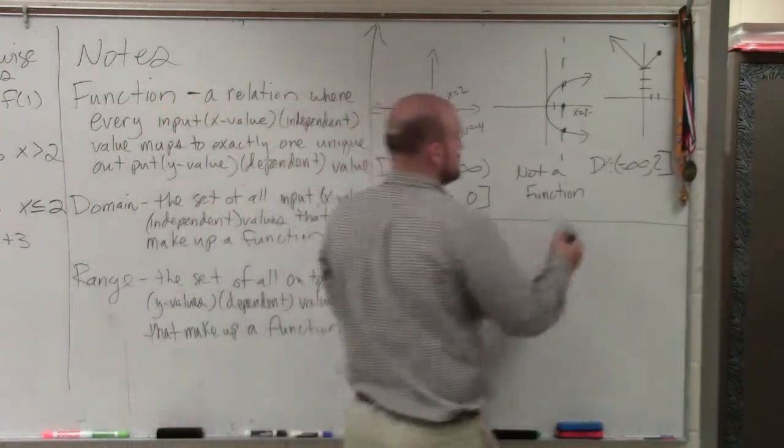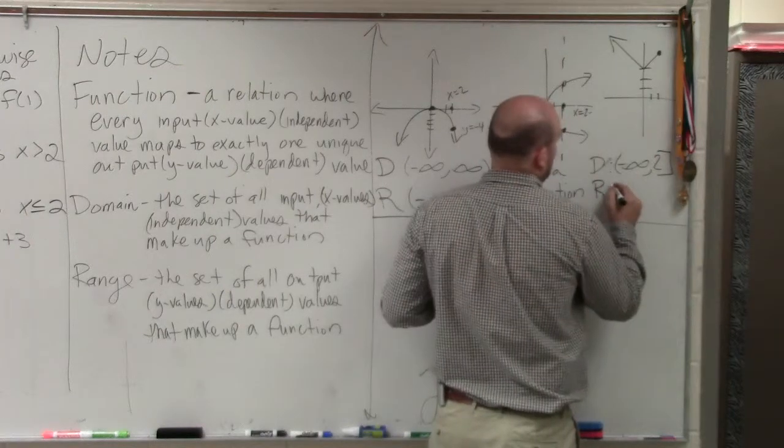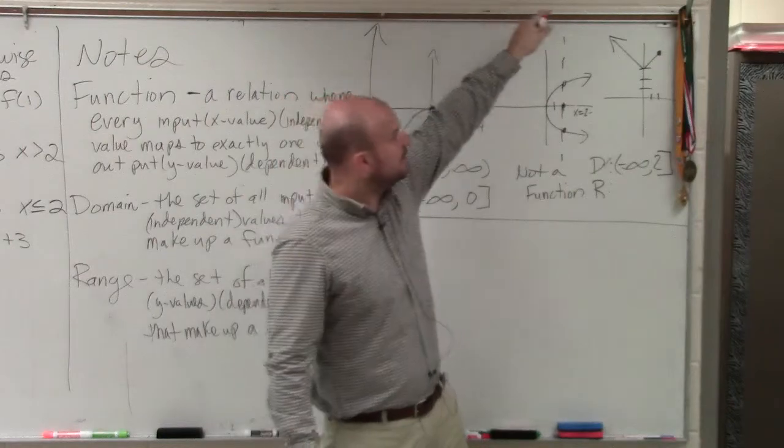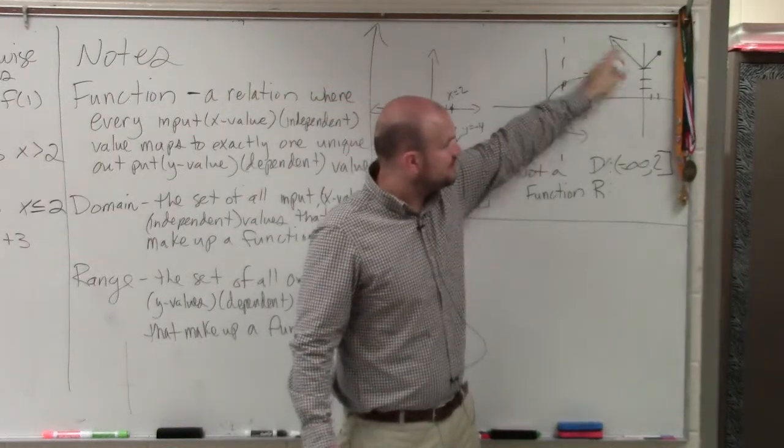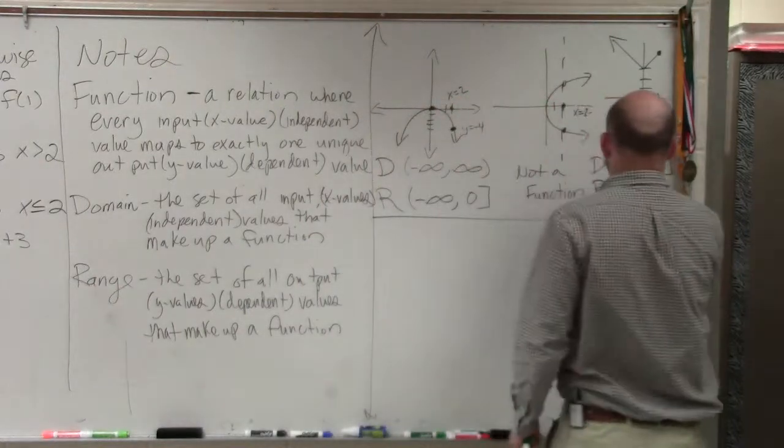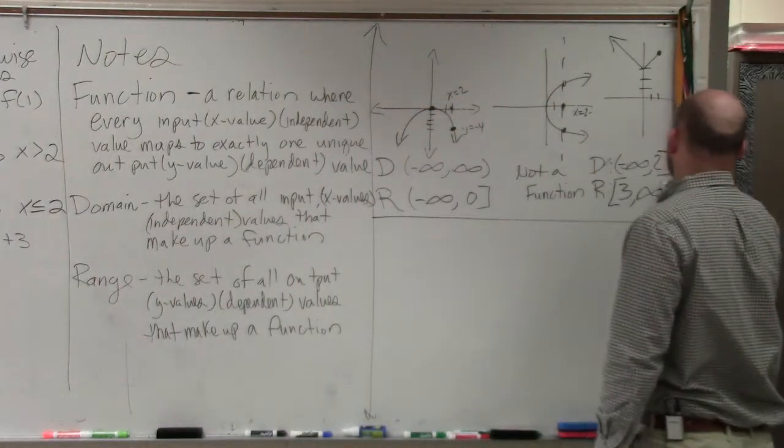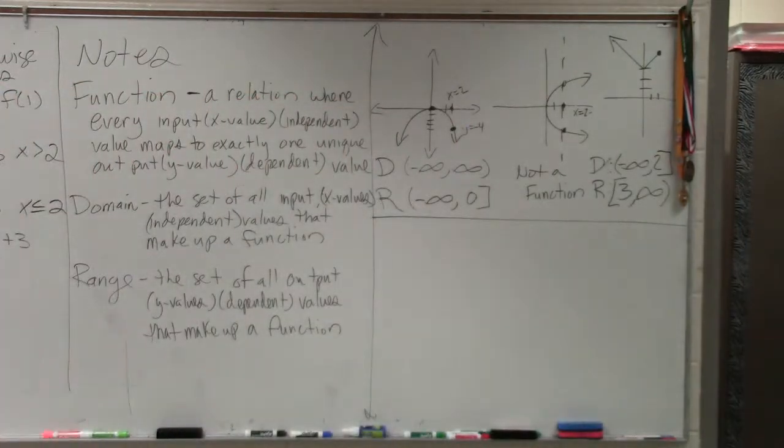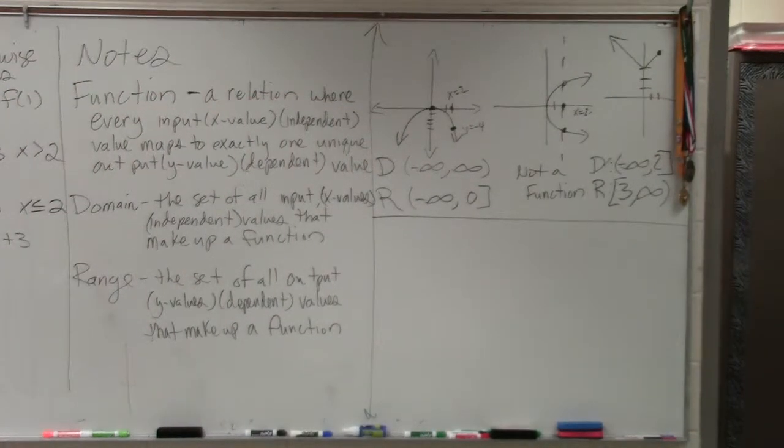And then range, you can see again that this arrow is going to go to the left and continue going up. However, the lowest that it goes to, it kind of bottoms out at 3. So it'd be 3 comma infinity.